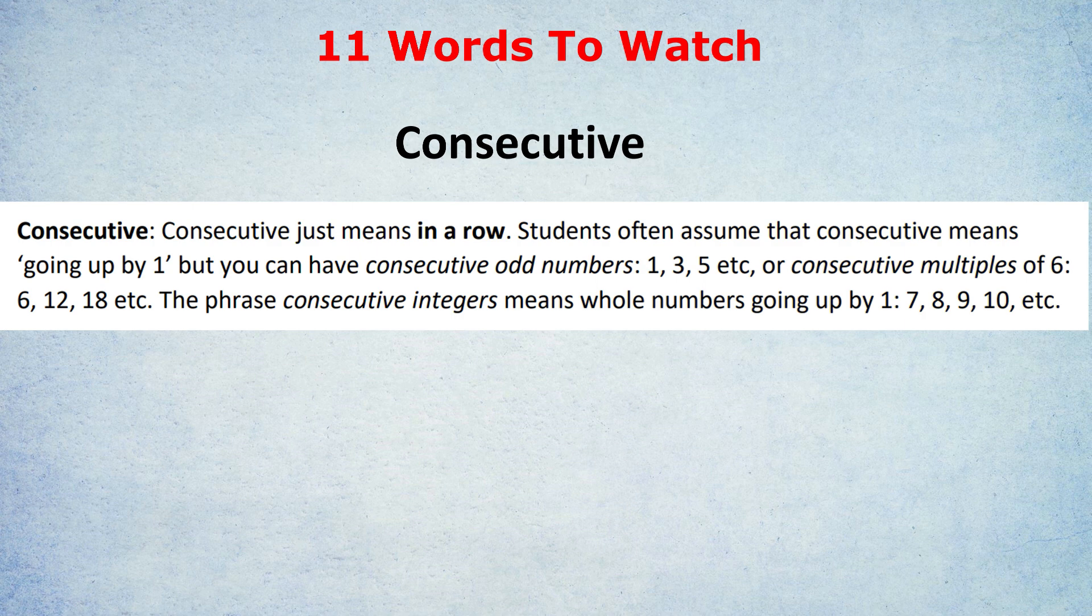But as I've written on screen, it could be consecutive multiples of six, for example, six, twelve, eighteen. Or consecutive odd numbers, one, three, and five. In short, if you see the word consecutive, it just means going up by the same amount each time. And if you see the phrase consecutive integers, that's when it means going up by one each time. And that's the first word or phrase I want you to watch out for in the test.